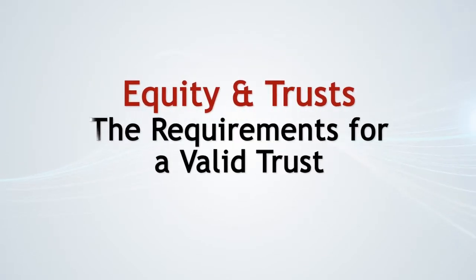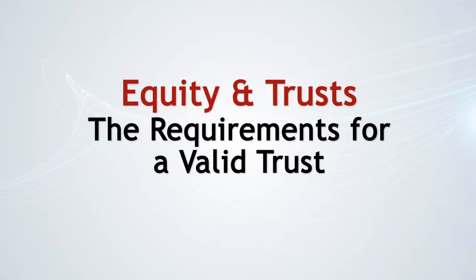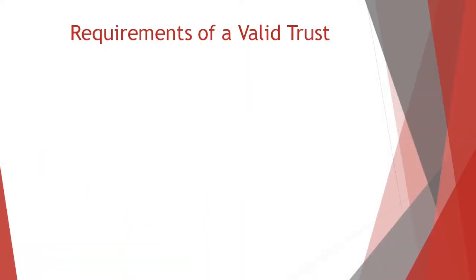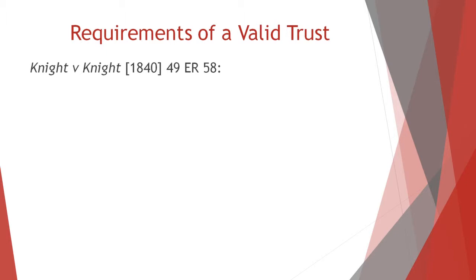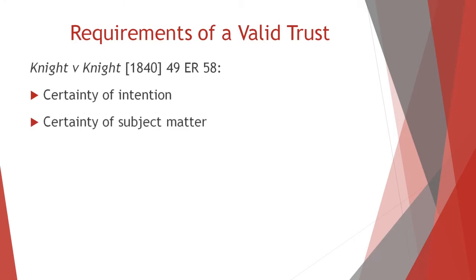In this presentation, we will look at the requirements for a valid trust and the three certainties. The case of Knight and Knight laid down the requirement for three certainties to be present in order for a trust to be effective. To be held as valid, trust instruments would have to have certainty of intention, certainty of subject matter, and certainty of objects.